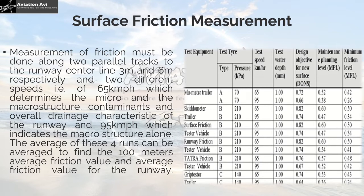In the image, we can see the test equipment — specifically the Mu Meter, which is the most basic and widespread type. Test Tire A is used; for this configuration the tire pressure is about 70 kPa. Tests are conducted at speeds of 65 and 95 km/h over a wetted surface with a water depth of 1 mm in both cases. For 65 km/h: DONS is 0.72, MPL is 0.52, and MFL is 0.42. For 95 km/h: DONS is 0.66, MPL is 0.38, and MFL is 0.62. This is how the friction values table is structured.